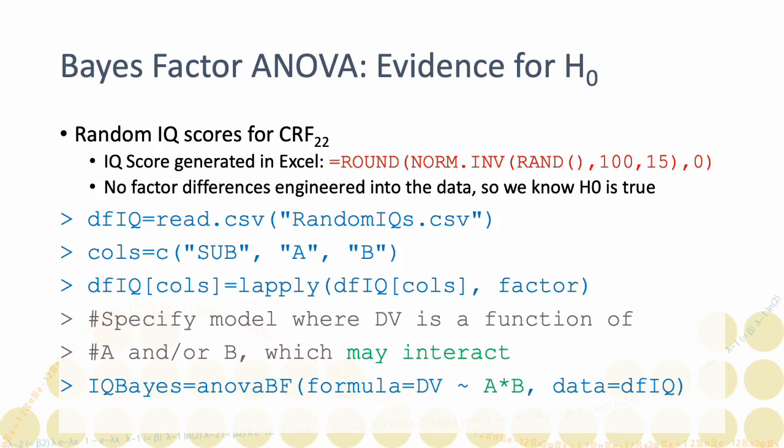I will specify a model where the dependent variable, dv, is a function of a and or b, and that a and b may interact. InnovaBF will check out models with just a, just b, both a and b but no interaction, and with a and b and their interaction. Because the a-b interaction implies both a and b, you get all those possibilities for free just by specifying the a-b interaction as I've shown in green.